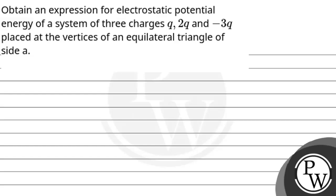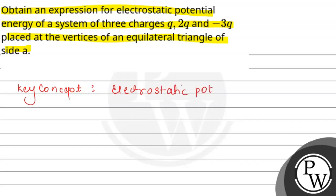Let's read this question. The question says: obtain an expression for electrostatic potential energy of a system of three charges Q, 2Q, and minus 3Q placed at the vertices of an equilateral triangle of side A. So here we have the key concept used — the electrostatic potential energy of a system of charges.